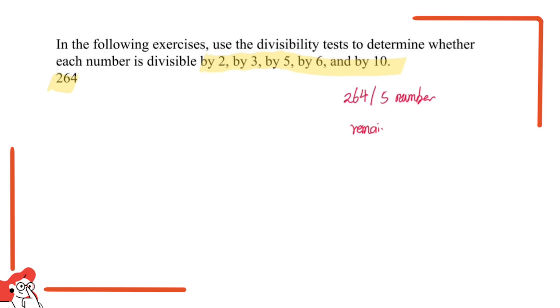If the remainder is equal to zero, then it's divisible by that number. Otherwise, it's not. Okay, so very simple. Since it's a very long calculation, we should go through this question together.